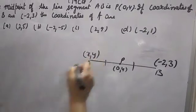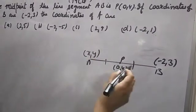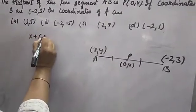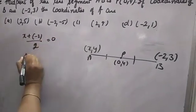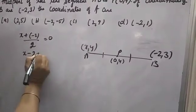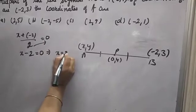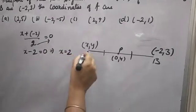Suppose you will take X and Y. Now, midpoint formula: (X + (-2))/2 = 0, given. So X - 2 = 0, which means X = 2. The x-coordinate of A will be 2.